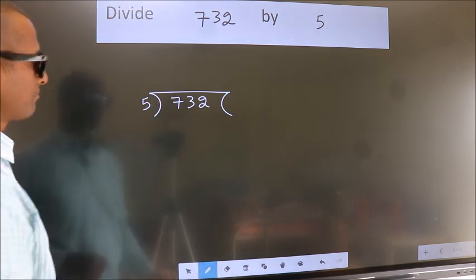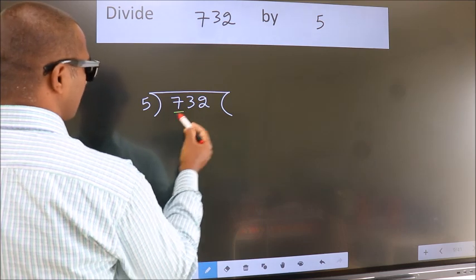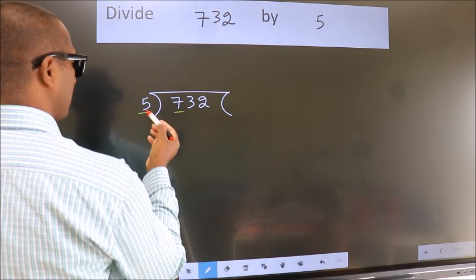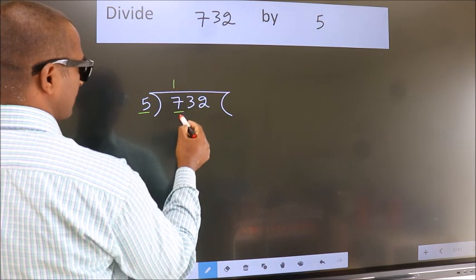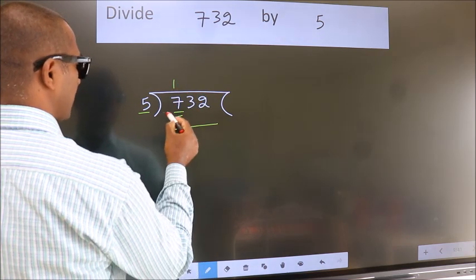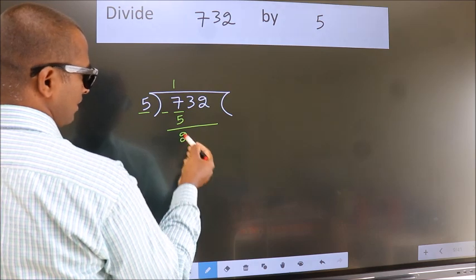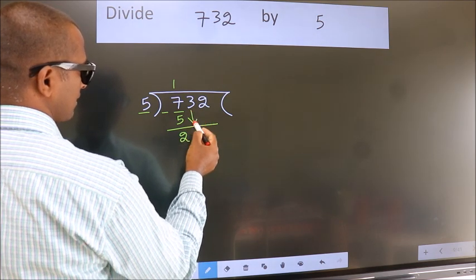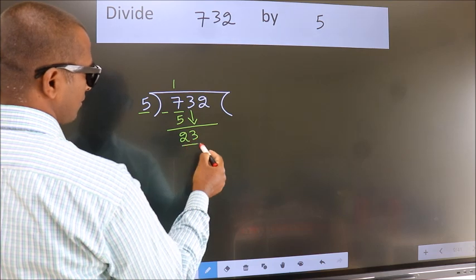Next, here we have 7, here 5. A number close to 7 in the 5 table is 5 times 1 is 5. Now we should subtract. We get 2. After this, bring down the beside number: 3 down, so 23.